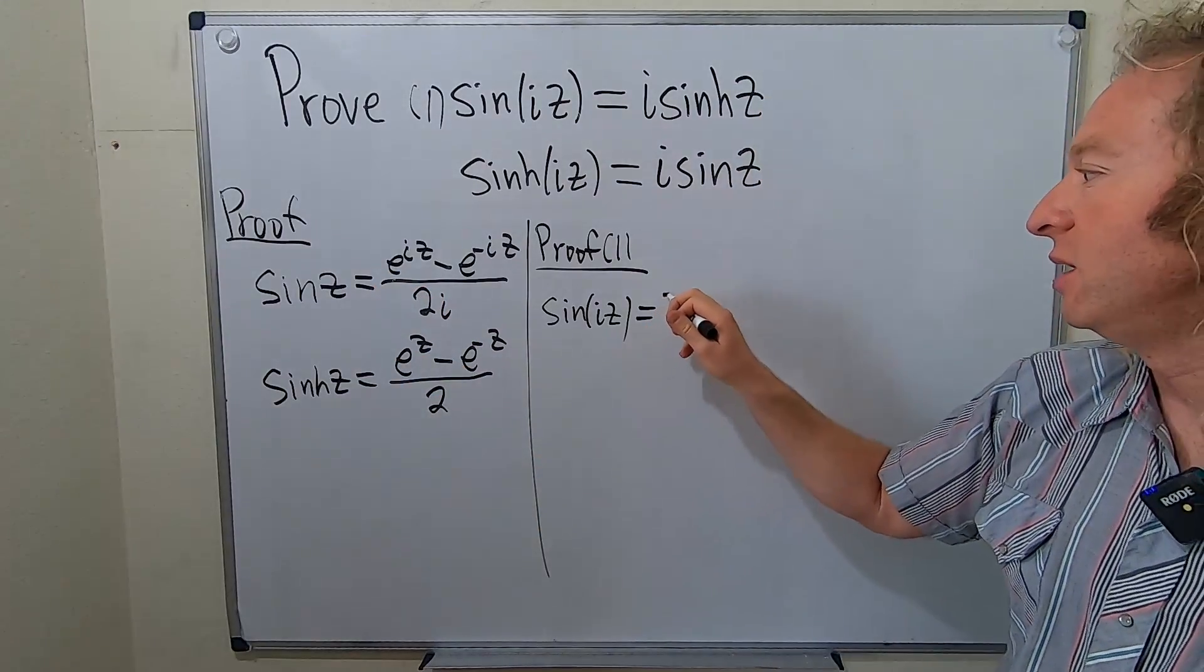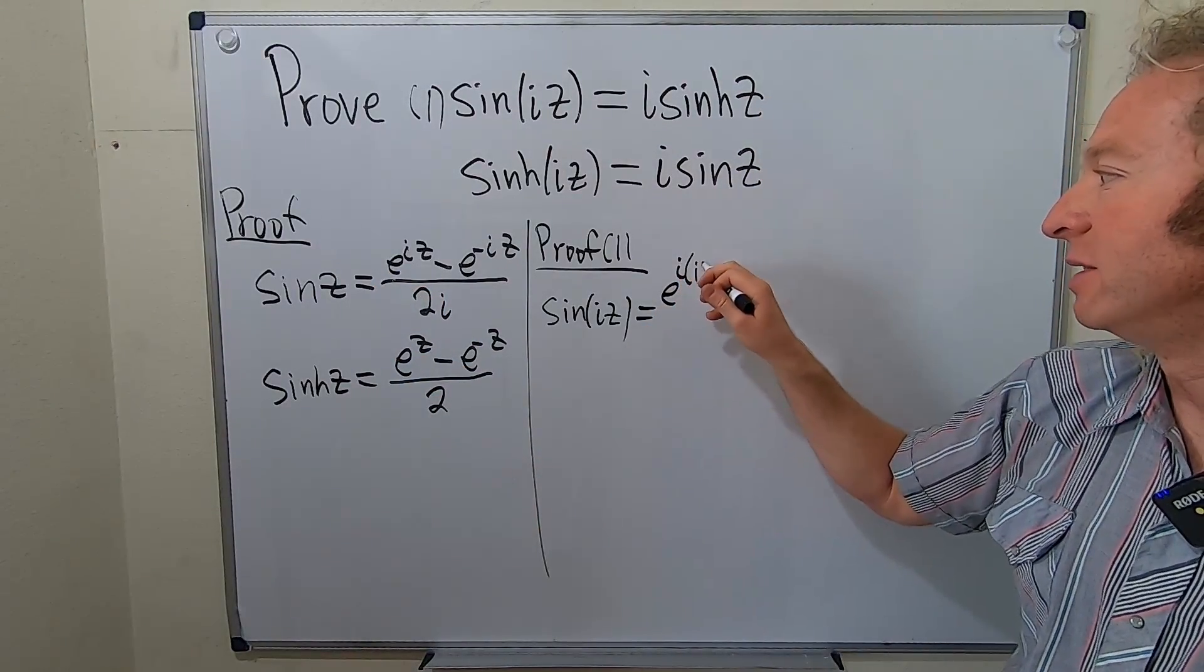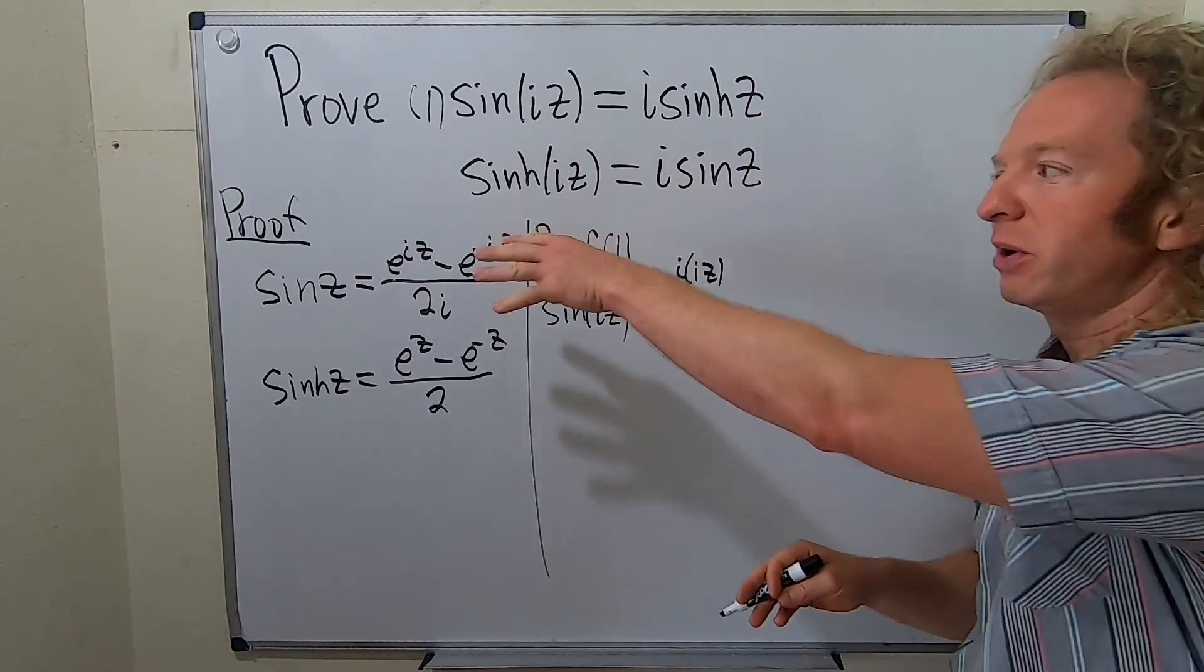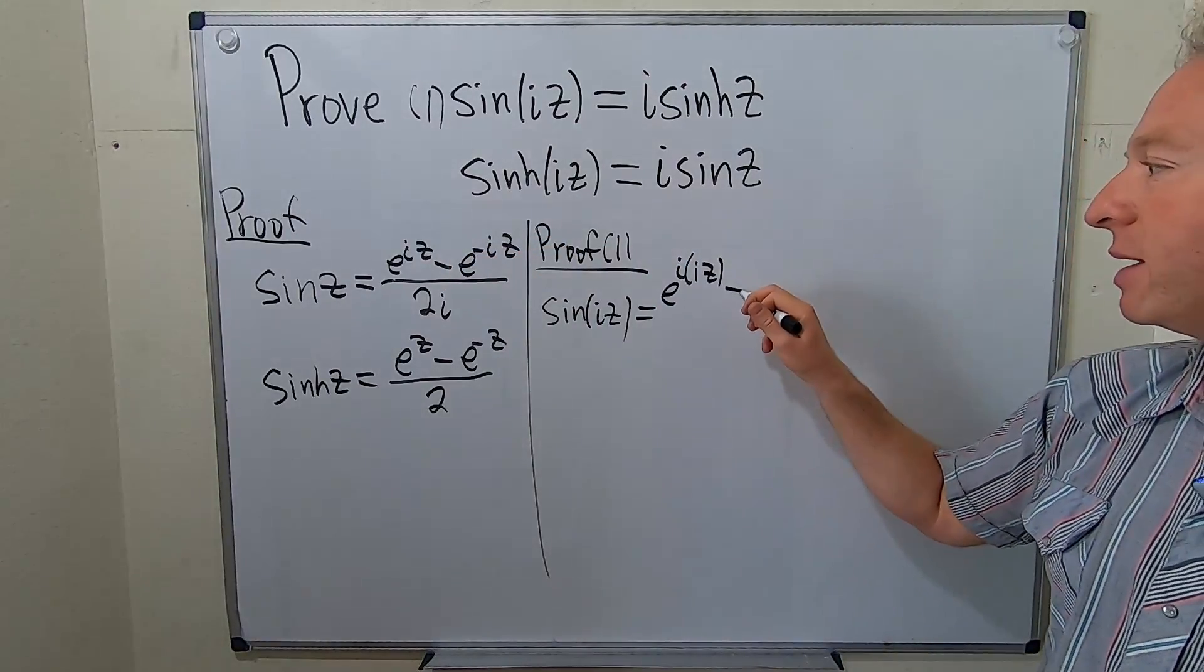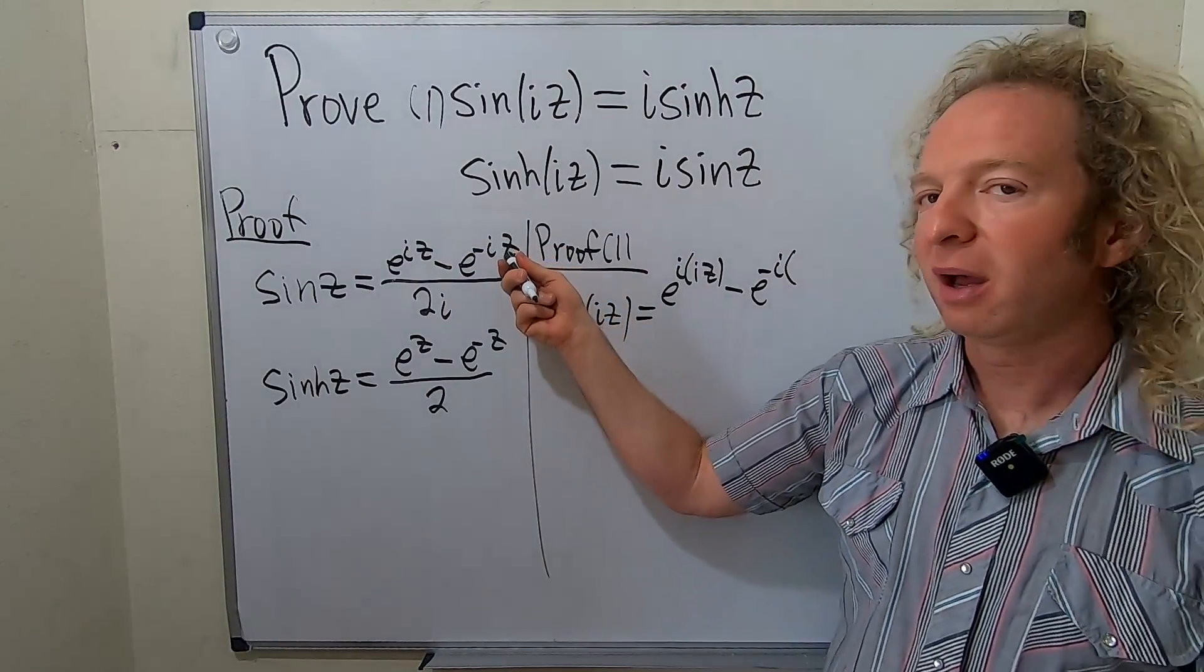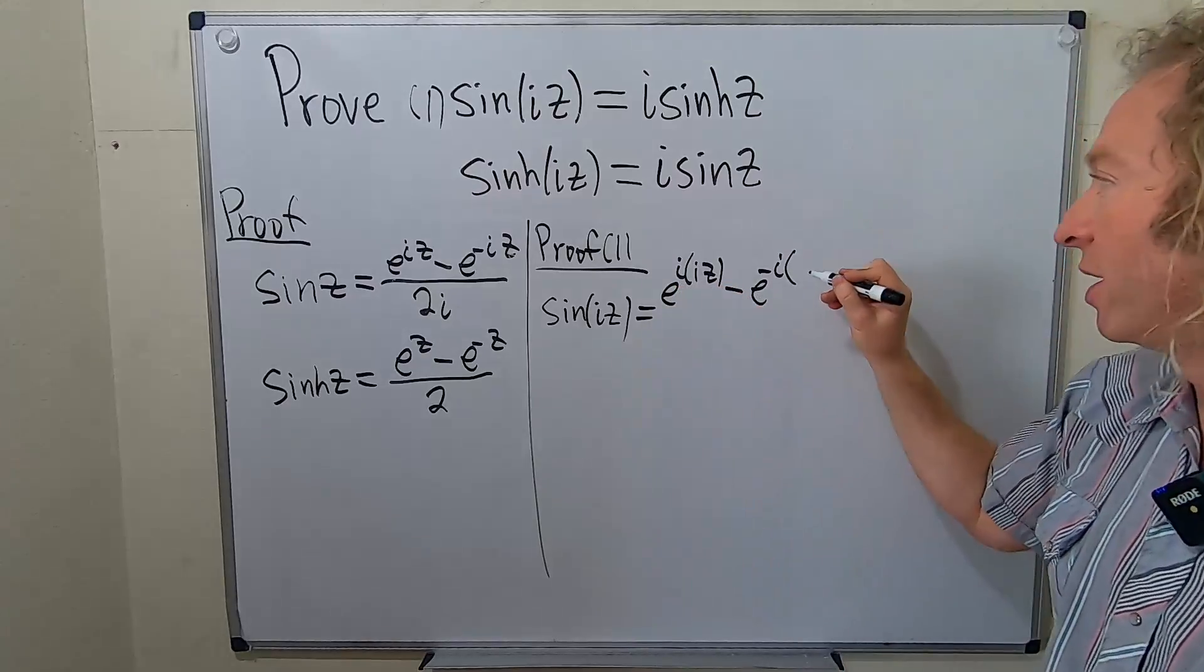So we're basically going to replace all of the z's with iz. So it'll be e to the i and then iz, just replacing z with iz. Okay, that's all we're doing. Minus e to the negative i and then replace z with iz.